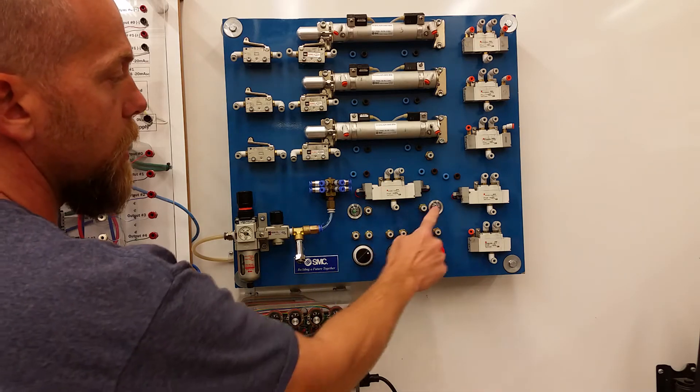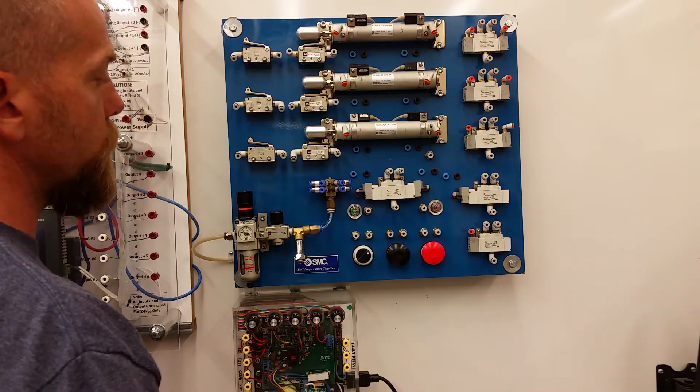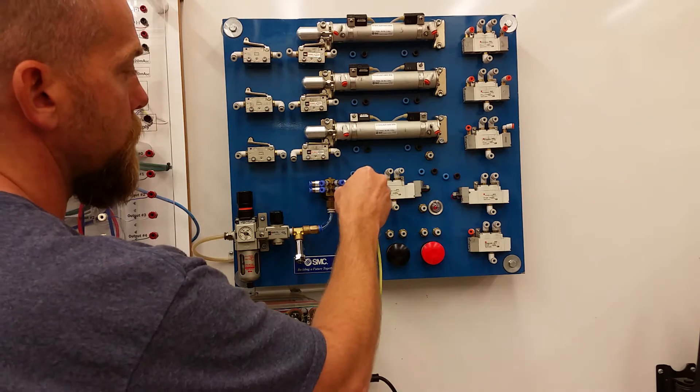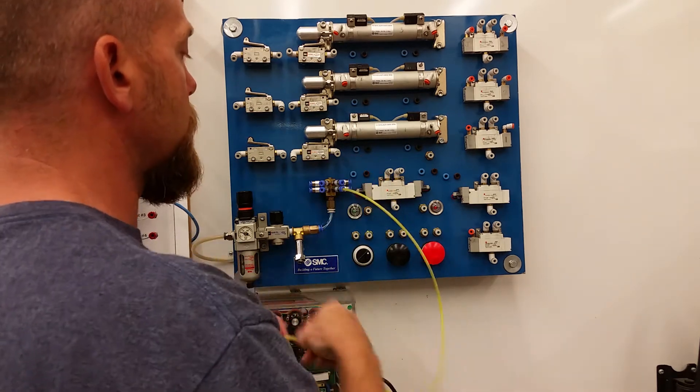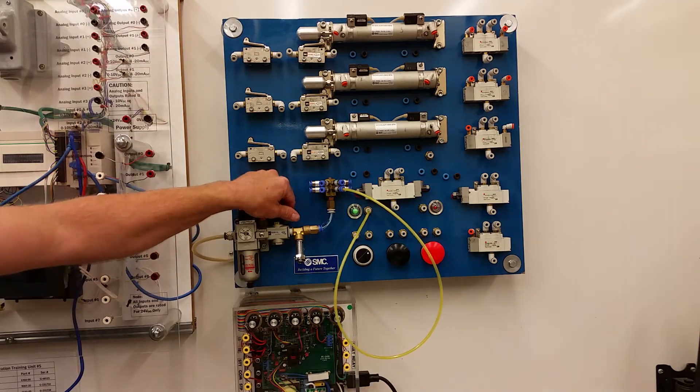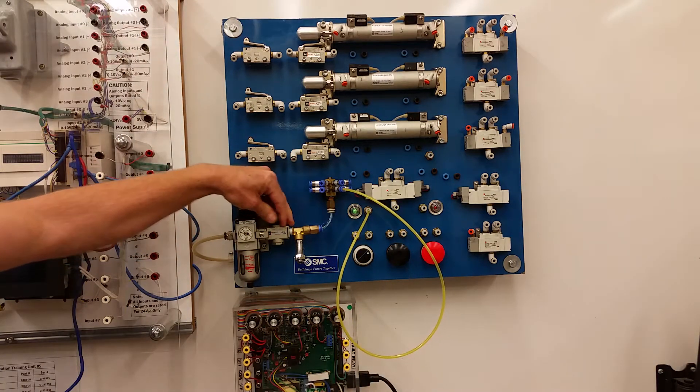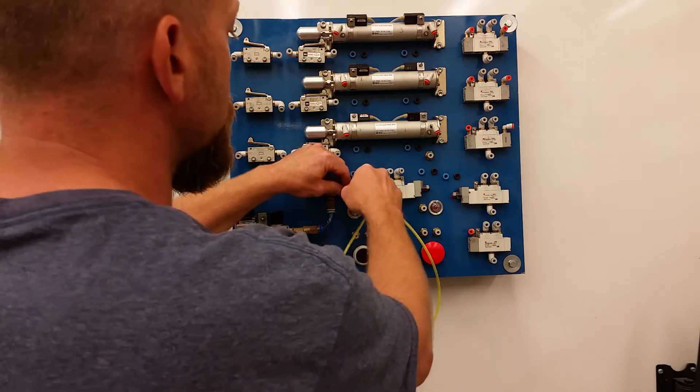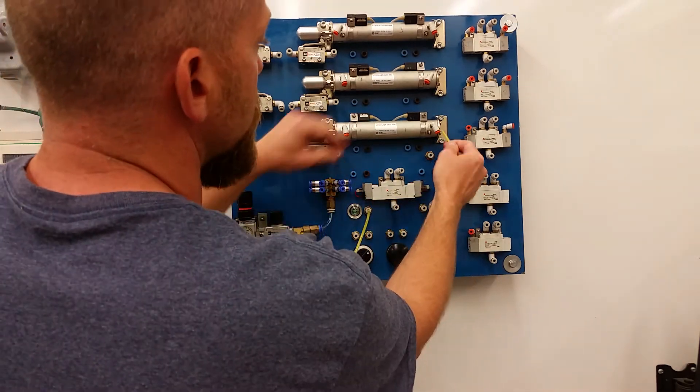We have two indicator lamps. We have a green and a red. And as soon as we put pressure to any of those ports, then it's going to indicate. Okay, so you may want to use those when you're extending or retracting any of your components.